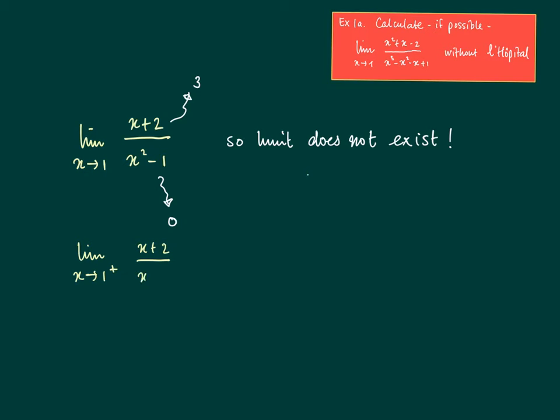Well, let us approach 1 from the right, indicated by 1 plus. We see that the numerator is larger than 0, and the denominator approaches 0 from above. So 3 divided by almost 0 is plus infinity.